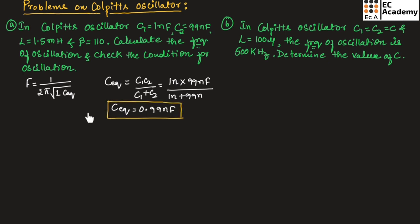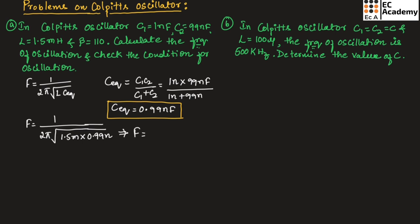Now let us substitute this value in the formula for frequency of oscillation. We get F = 1 / (2π √(1.5 millihenry × 0.99 nanofarad)). Solving this, we get the frequency of oscillation as 130.6 kilohertz. This is the frequency of oscillation.